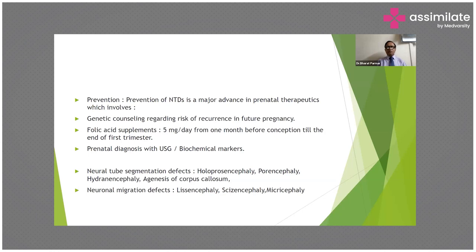Other neural tube segmentation defects include holoprosencephaly, porencephaly, hydranencephaly, agenesis of corpus callosum, and neural migration defects such as lissencephaly, schizencephaly, and microcephaly.